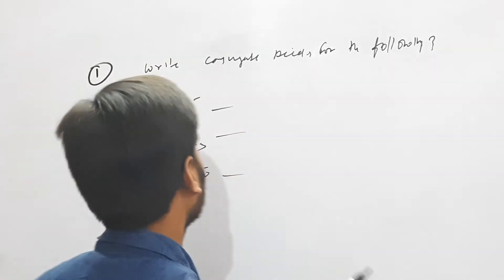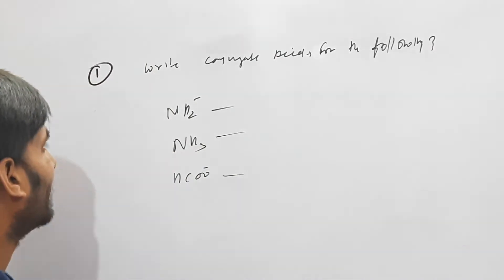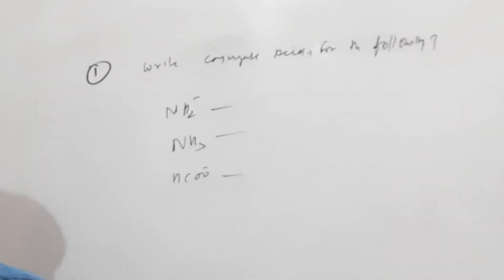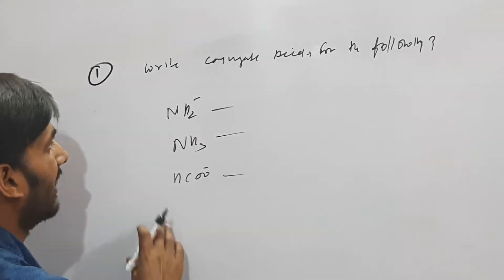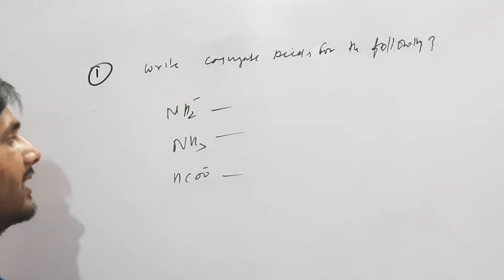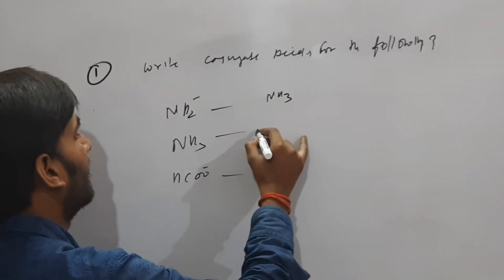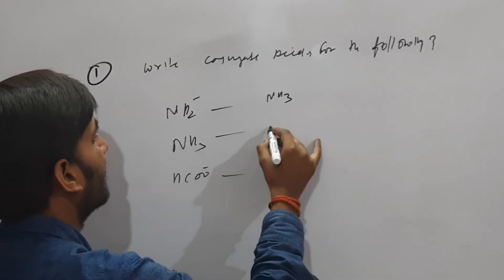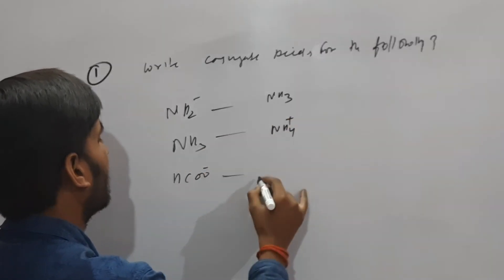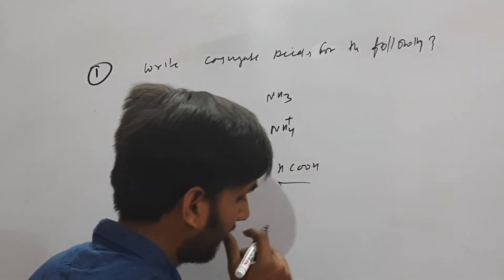Conjugate Acid-Base: जो Acid होता है, Acid H⁺ को Donate करता है। तो इसमें क्या करेंगे — H⁺ को Add कर देंगे, तो यह क्या बन जाएगा? यह बन जाएगा Conjugate Acid। इसका Conjugate Acid हो जाएगा NH4⁺।